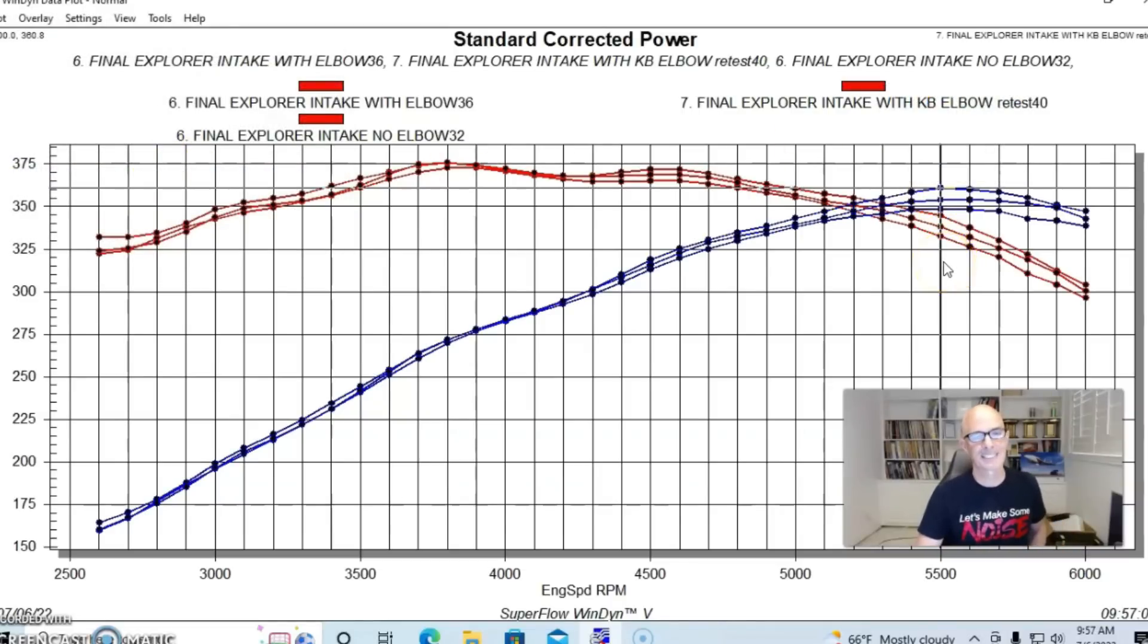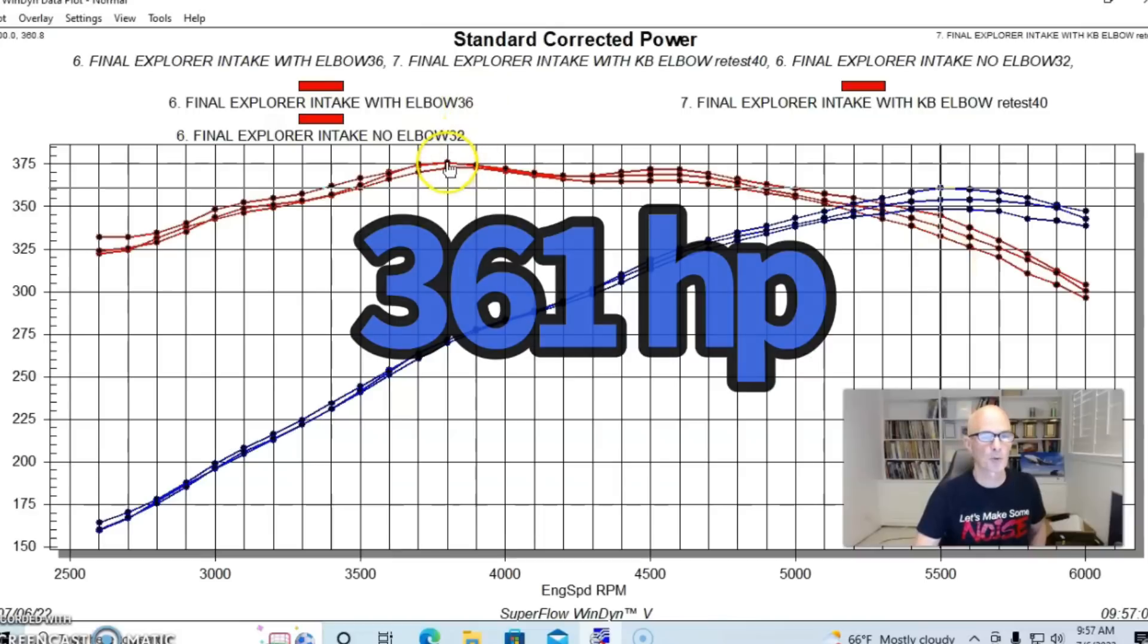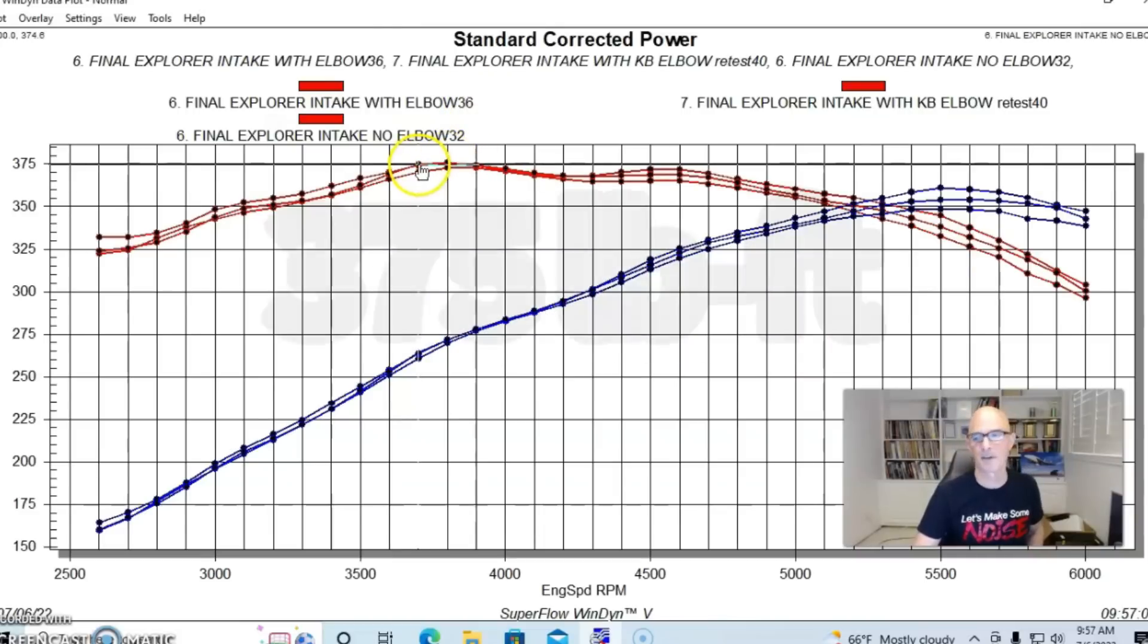It picked up, it went up to 361 horsepower. Peak torque was not changed a lot, 374, 375 foot-pounds. But you can see it did pick up power here up top.